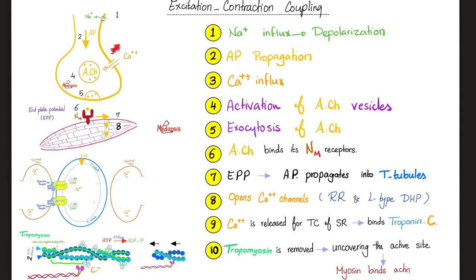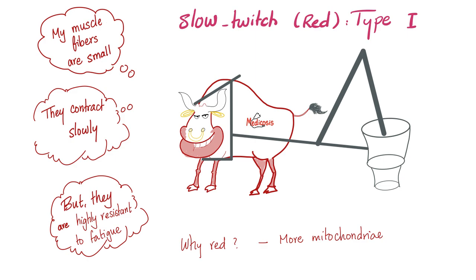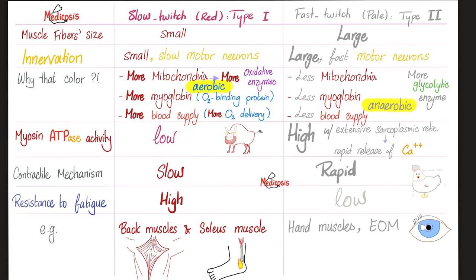The excitation-contraction coupling was discussed before — pause and review. The factors that affect skeletal muscle contraction are five. We talked about number one and number five before. Recall: for the slow twitch fibers, remember the ox; for the fast twitch fibers, remember the chicken. Your body has both types of fibers. Here's the comparison between the two types — pause and review.